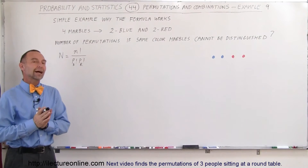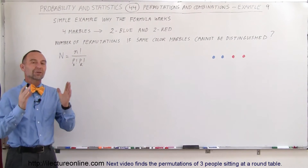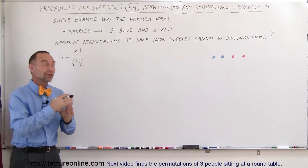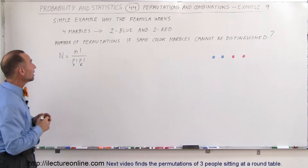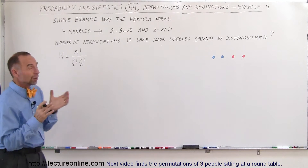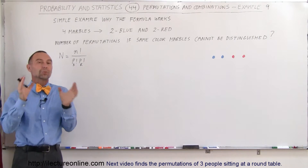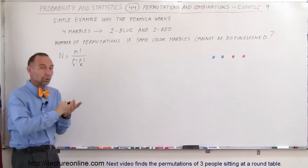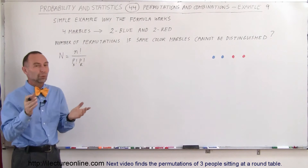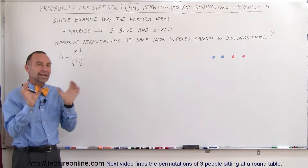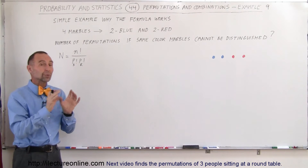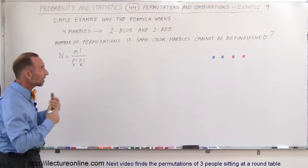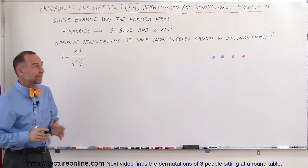Welcome to our lecture. We're going to do a simpler example of what we did in the previous video, video number 43. We're going to try to find the number of permutations that we can have with four marbles when two are blue and two are red, and we cannot distinguish between the blues and we cannot distinguish between the reds. So the same color marbles cannot be distinguished.